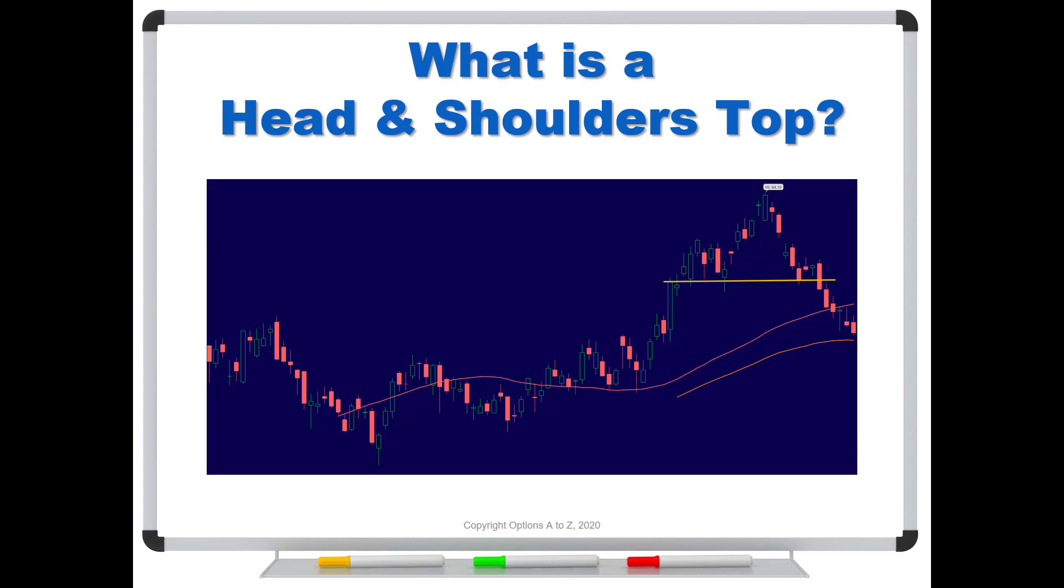Earlier in the week, I posted about DraftKings and a head and shoulders top that had formed. And I talked about the critical neckline support, which we'll talk about in a little bit. I said if that point is broken, expect the stock price to decline, which is what it has done. And in the meantime, I've had traders say, what in the world is a head and shoulders top? How do you detect one and how do you read it? So all good questions. Let's go take a look.